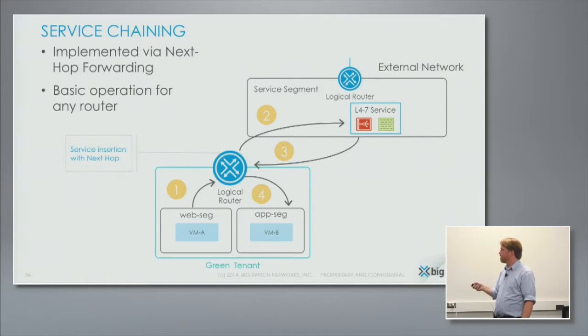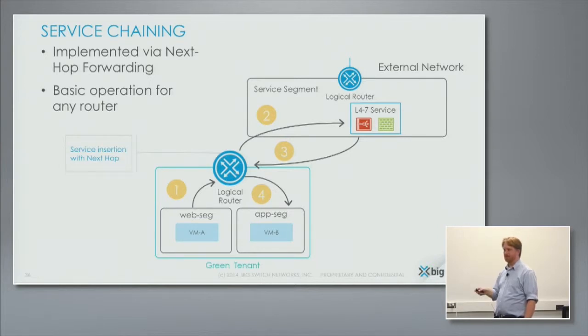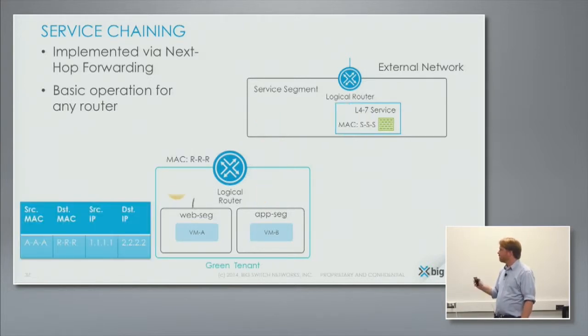The logical router is smart enough to say this came from this device, and it has another policy that can send this on directly. The way this works in practice is we actually just do standard routing.